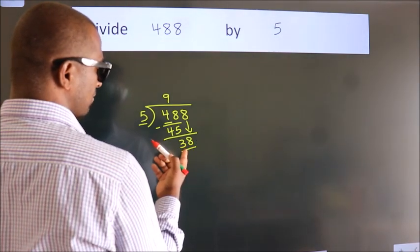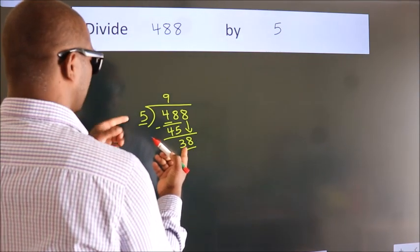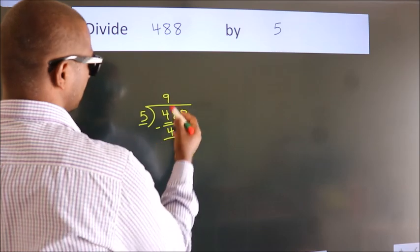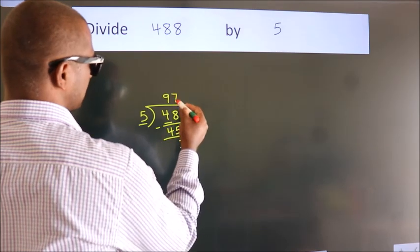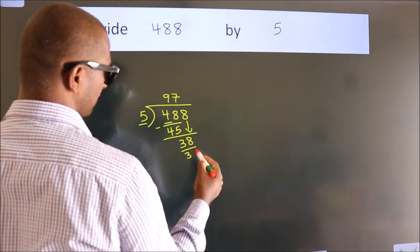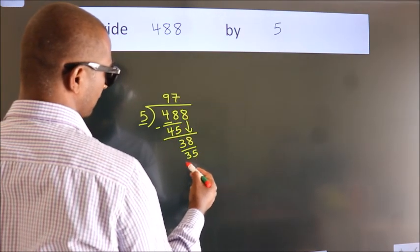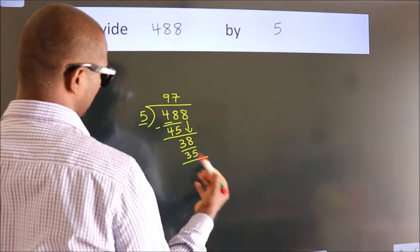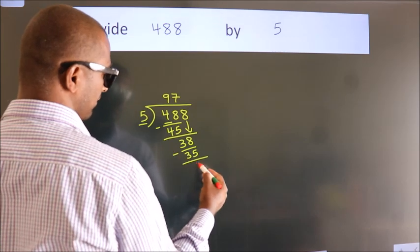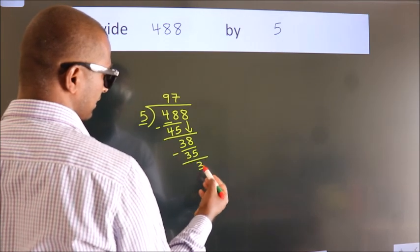A number close to 38 in the 5 times table is 5 sevens, 35. Now we subtract. We get 3.